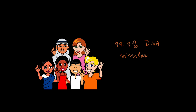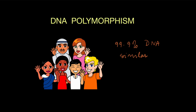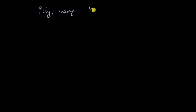A lot of these variations are called DNA polymorphism. In this video we are going to take a look at what DNA polymorphism is and what it results from. 'Poly' means many and 'morphism' refers to forms. So when DNA is present in many forms in different individuals of the same species, it is said to have polymorphism.